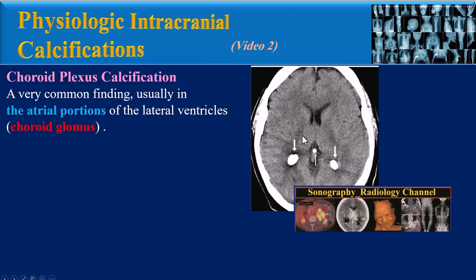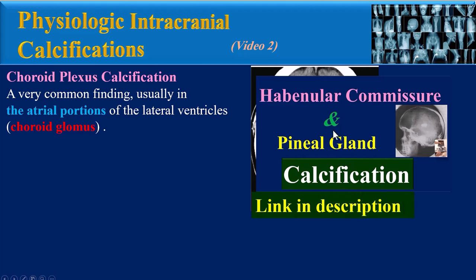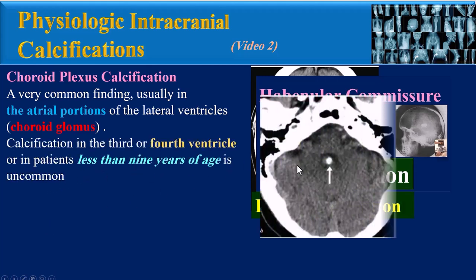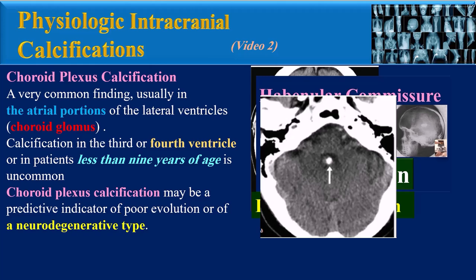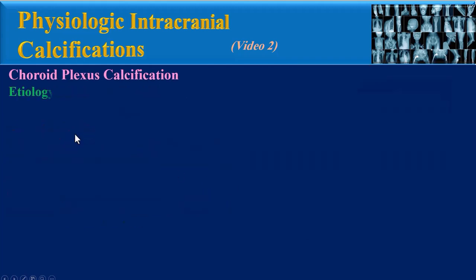This axial CT image shows bilateral choroid plexus calcifications and also pineal gland calcification. Calcification in the third or fourth ventricle, or in patients less than nine years of age, is uncommon. Choroid plexus calcification may be a predictive indicator of poor evolution or of a neurodegenerative disease, as seen in this axial CT image showing choroid plexus calcifications in a schizophrenic patient.